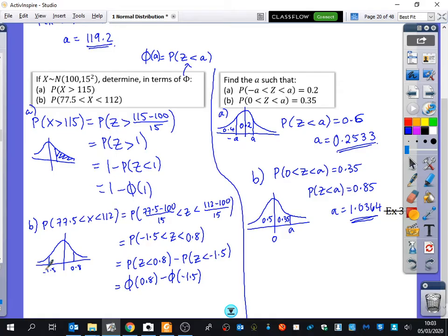So for this one, X being greater than 115, I changed the X to a Z because I was standardizing it, which meant I also had to standardize the 115, so it came up as this. So it became that Z was greater than 1, but that's not in phi notation, so I had to make it as a less than 1, so it became 1 minus phi of 1.